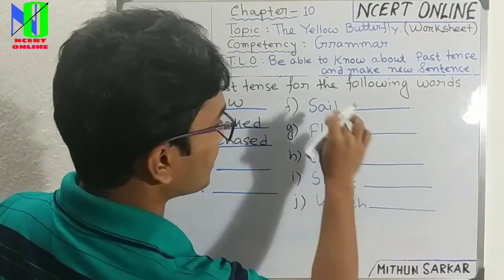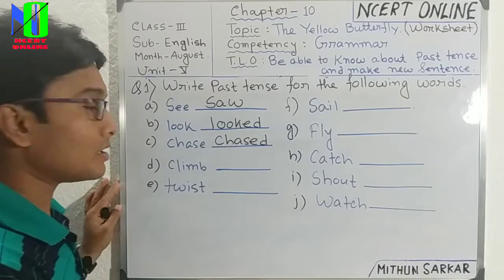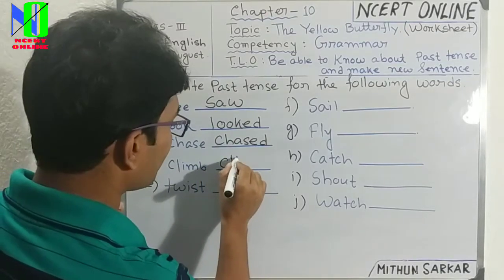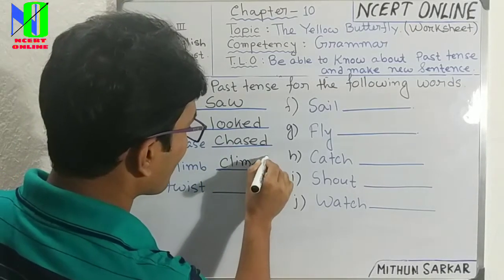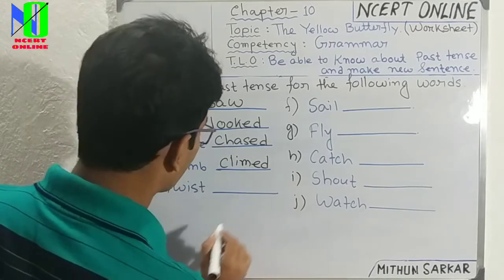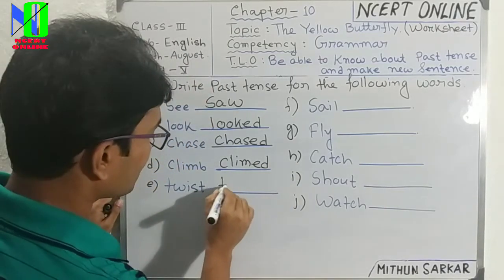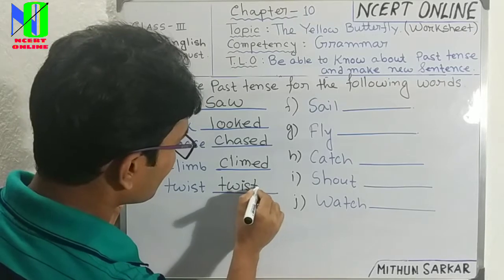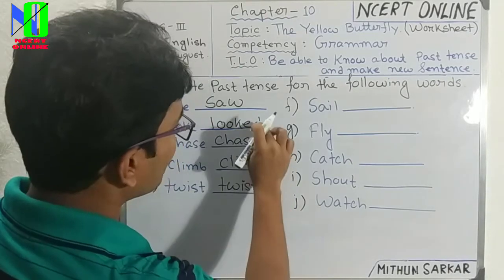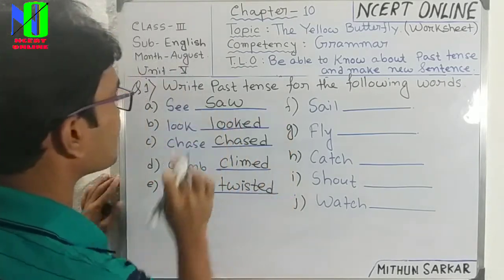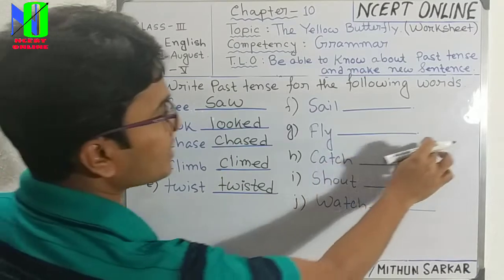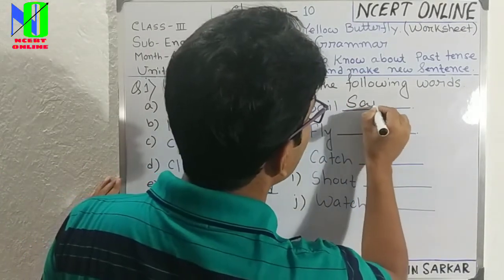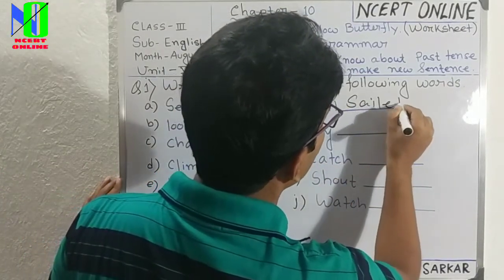When you read our story, you will find these types of words inside. Then 'climb' becomes 'climbed.' Then 'twist' becomes 'twisted' — you need to add only 'ed' here. Then 'sail' becomes 'sailed.'